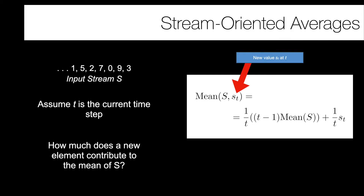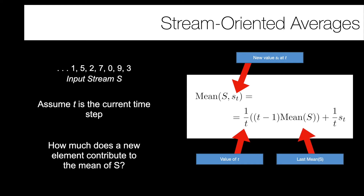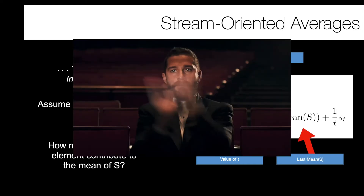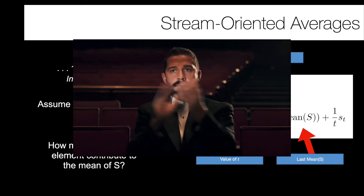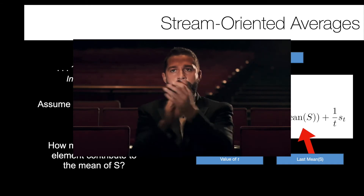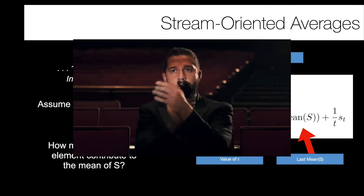So we no longer have to maintain the entire stream to know its average — we only need to remember the mean at the previous time step, the current time step t, and the new value we just observed. That answers the averages problem. Now we can deal with averages in streams.